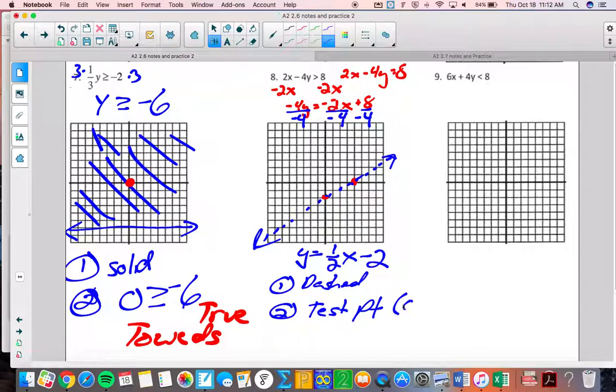So, if I tested 0, 0, that is right here. Using it in standard form is pretty sweet. You can actually go back and do the original one. Because 2 times 0 is 0, minus 4 times 0 is 0. I get 0 is greater than 8. That is not true. So, it's false. I'm going to shade away.